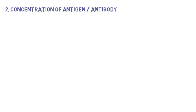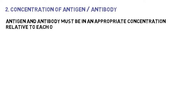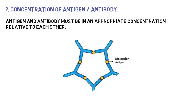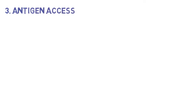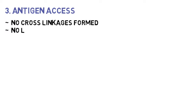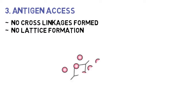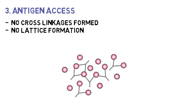Antigens and antibodies must be in an appropriate concentration relative to each other so that lattice formation can occur and all the antigens and antibodies can precipitate. If antigens are in excess, no cross-linkages are formed because antibodies are insufficient, hence no lattice formation. Because antigens and antibodies remain small and soluble, no precipitation occurs.